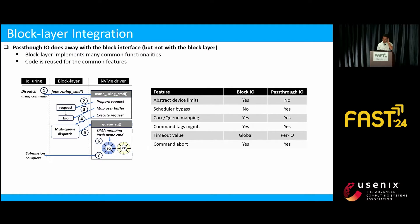The table on the right-hand side shows some feature comparisons. Block IO abstracts the device limits — it is possible to send larger IO than what the device supports — while pass-through by definition cannot do this since it is a direct-to-device interface. The scheduler can also do IO merging, which is skipped for pass-through. Other block layer features such as QoS, tag management — which help share the device among many applications for multi-tenancy — and command abort are available for both. The command timeout value is global for block IO and per-IO for pass-through.